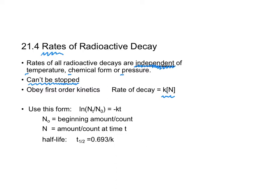We're not going to use the format y = mx + b. We will use a different format. They use the symbol N for the amount or count at time T, and N0 for the amount or count at time 0. We still have our rate constant and we have time.